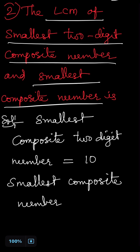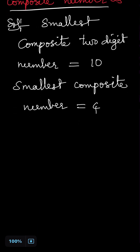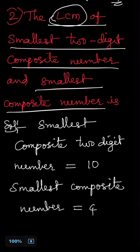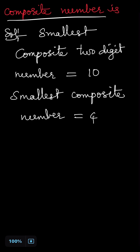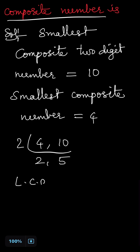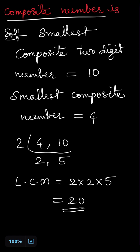The smallest composite number is 4. So we take the LCM of 4 and 10. Prime factorization: 4 = 2², and 10 = 2 × 5. Since 2 and 5 are prime, we stop there. LCM = 2 × 2 × 5 = 20. So the LCM of the smallest two-digit composite number and the smallest composite number is 20.